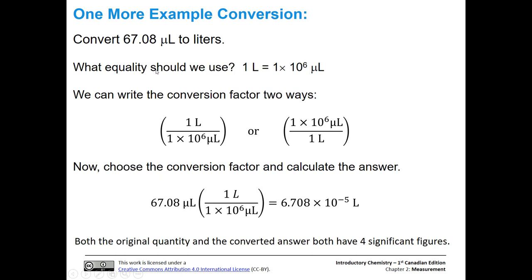Let's go from microliters to liters. One liter equals one times ten to the sixth microliters — one big thing equals a whole bunch of small things. We can write the conversion factor two ways: one liter over one times ten to the sixth microliters, or the other way around. We want to convert from microliters to liters, so we use the conversion factor that has microliters on the bottom. So 67.08 microliters divided by one times ten to the sixth microliters times one liter gives us 6.708 times ten to the negative fifth liters. Our original quantity and our answer both have four significant figures — there's a sandwich zero we have to count.